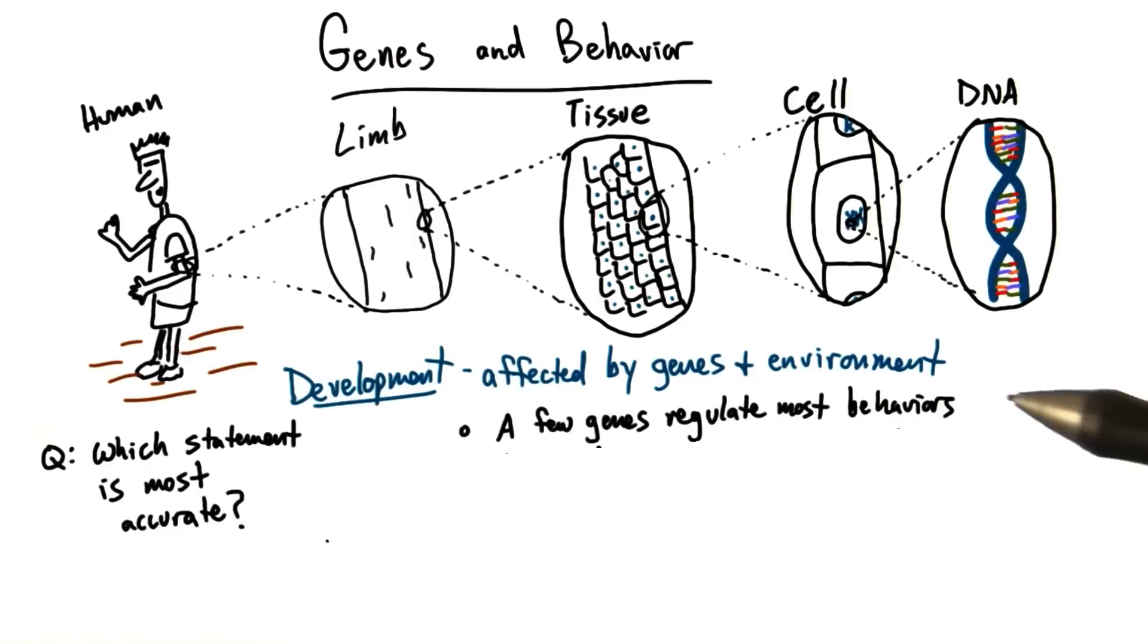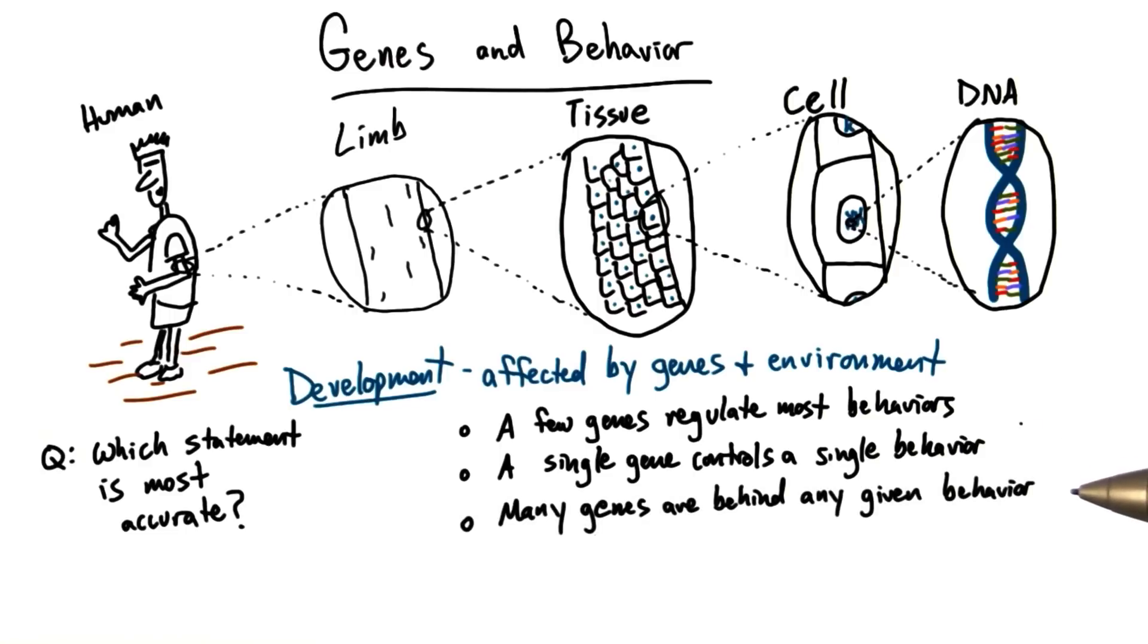Is it that a few genes regulate most behaviors, a single gene controls a single behavior, many genes are behind any given behavior, or genes have no connection with behavior at all?